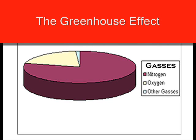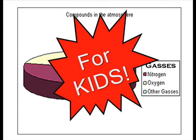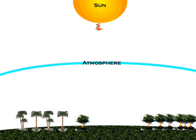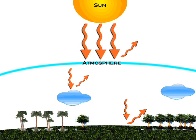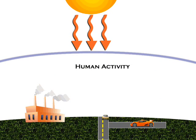The greenhouse effect, for kids. That is a sun ray. Sun rays are absorbed by clouds and part of it is reflected by them. Then sun rays are absorbed by Earth and then reflected.